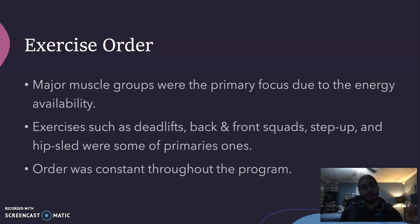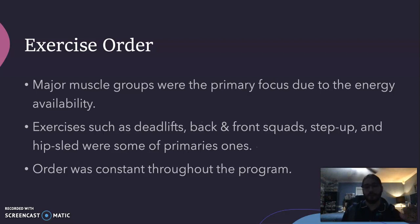For exercise order, we went with major muscle groups first, as they were the primary focus due to energy availability. Exercises such as deadlifts, back squats, front squats, step-ups, and hip sled were among the primary ones. Minor muscle groups were also trained but with fewer exercises. The exercise order was constant throughout the program.